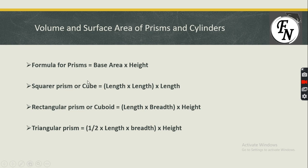For the volume of a cube — which is a three-dimensional figure with a square base — its prismatic name is square prism. A rectangular base is also known as a cuboid, or rectangular prism. A triangular base gives us a triangular prism, and so on. For a cube, the formula we discussed earlier was length × length × length, or L³. For a cuboid, it was length × breadth × height.